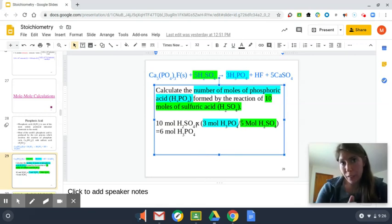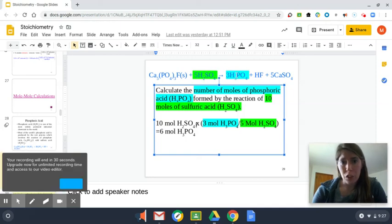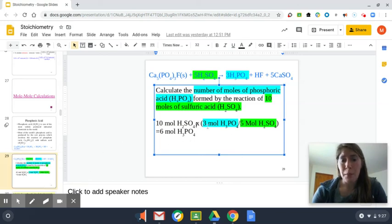A common mistake folks make is people don't go to the equation for the mole ratio, they go to the problem, and you don't want to do that. For this mole ratio, this three over five here, it comes directly from the equation. So my desired is three moles of H3PO4 over five moles of sulfuric acid. I plug this into a calculator: 10 times three over five, and I'm left with six moles of phosphoric acid.